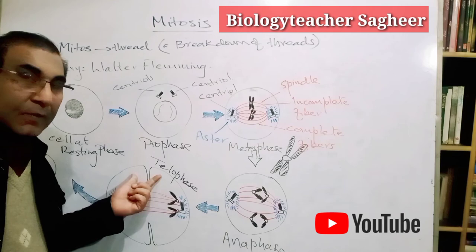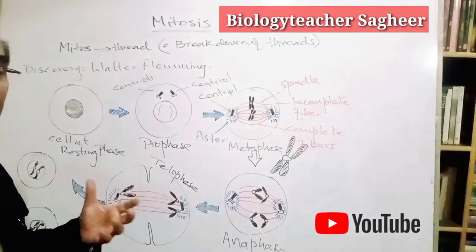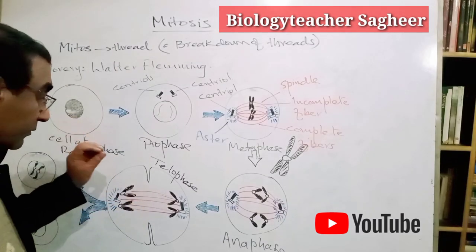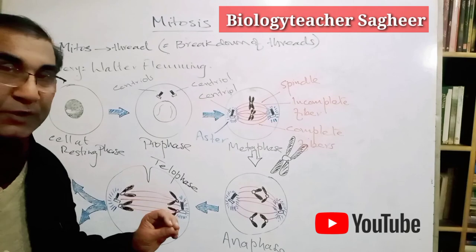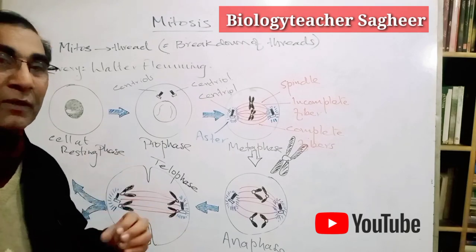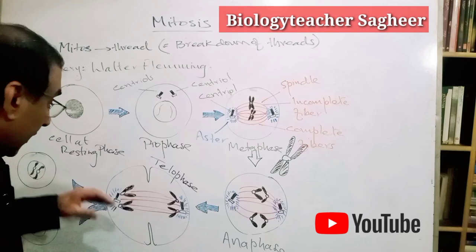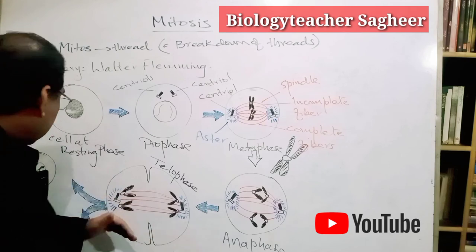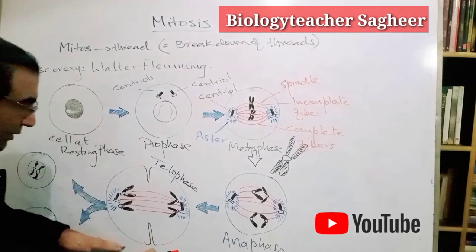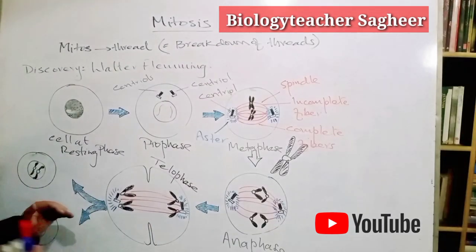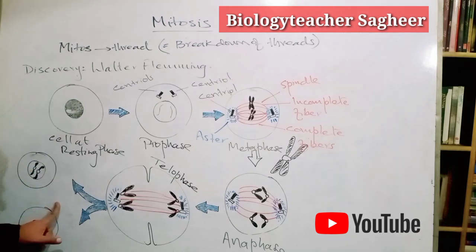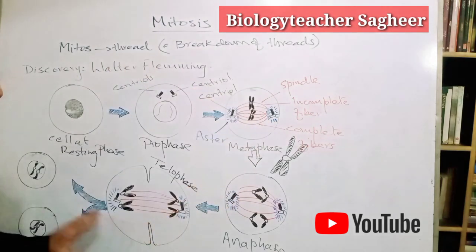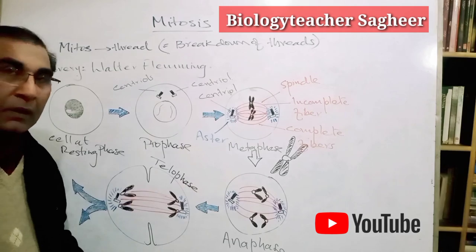This constriction occurs due to certain proteins — the most important is actin protein, which is present on the inner side of the plasma membrane. In early telophase this begins, and at the end of telophase — the late telophase — two daughter cells are formed. This is the story of mitosis.